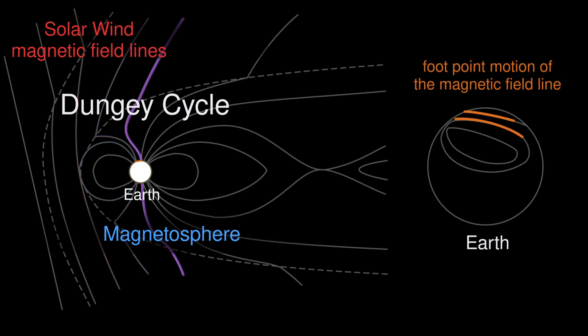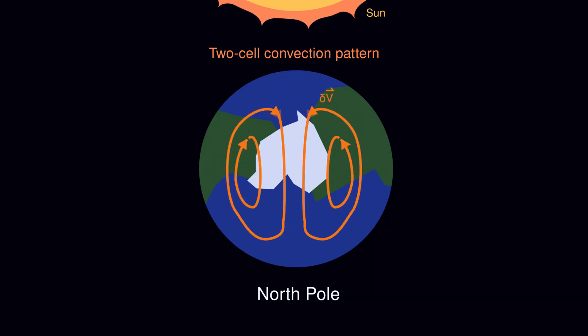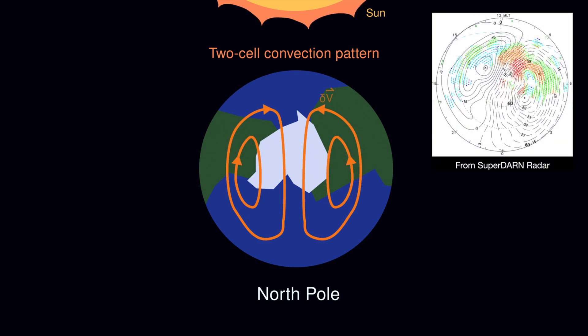During this cycle, the footpoints of this field line trace a cell on the dusk side of the polar cap, another cell on the dawn side, both at the north and the south. This two-cell convection pattern on the ionosphere of the polar cap can be observed by radars.